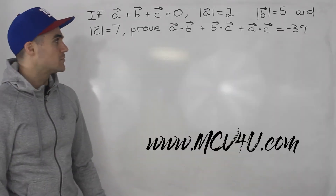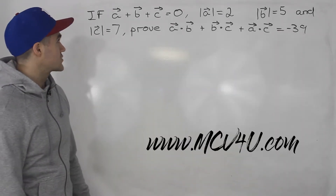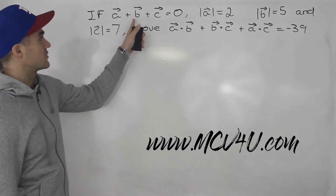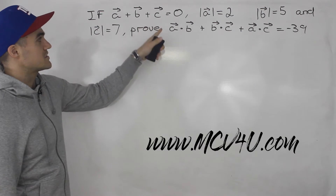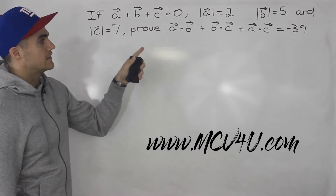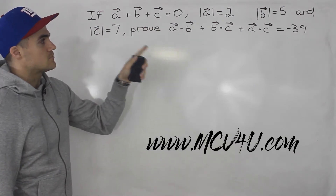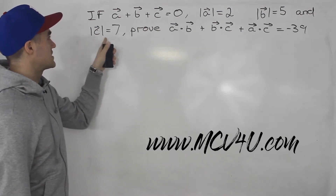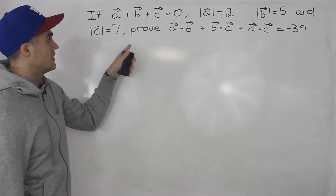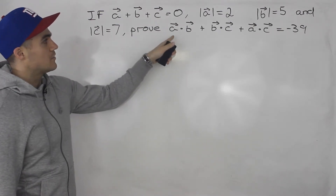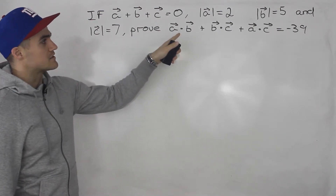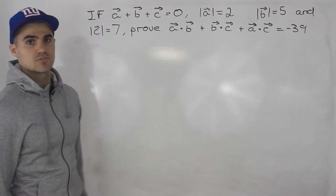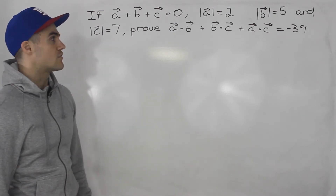Welcome back everybody, Patrick here. Moving on to the next question. If vector a plus vector b plus vector c is equal to zero, magnitude of a is two, magnitude of b is five, and the magnitude of c is seven, we have to prove that a dot b plus b dot c plus a dot c is equal to negative 39.